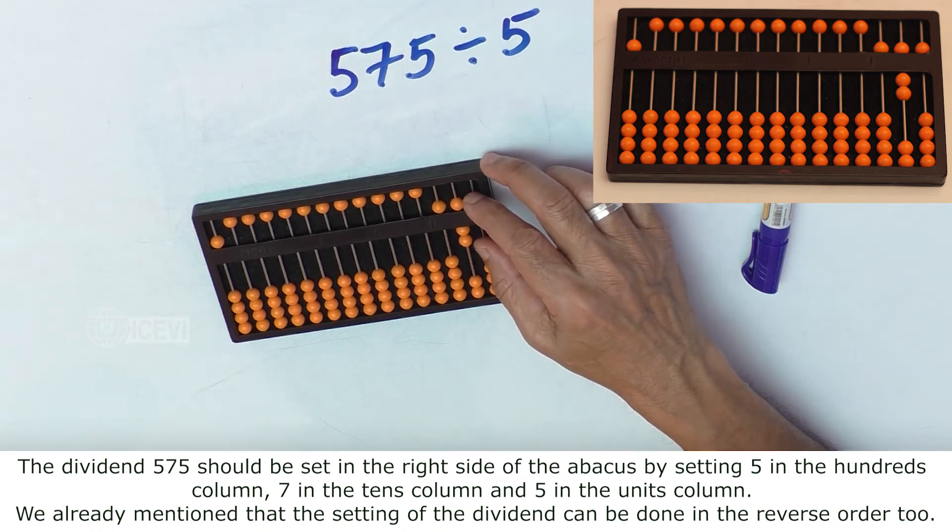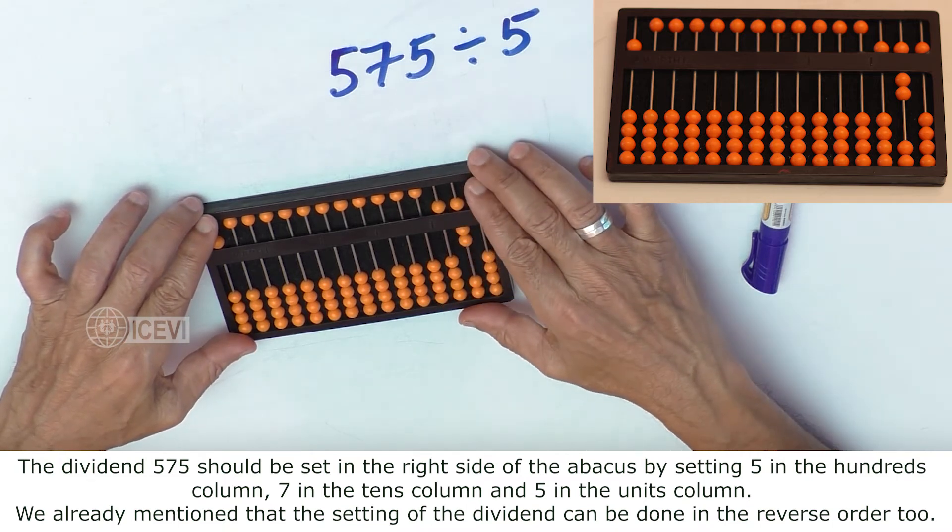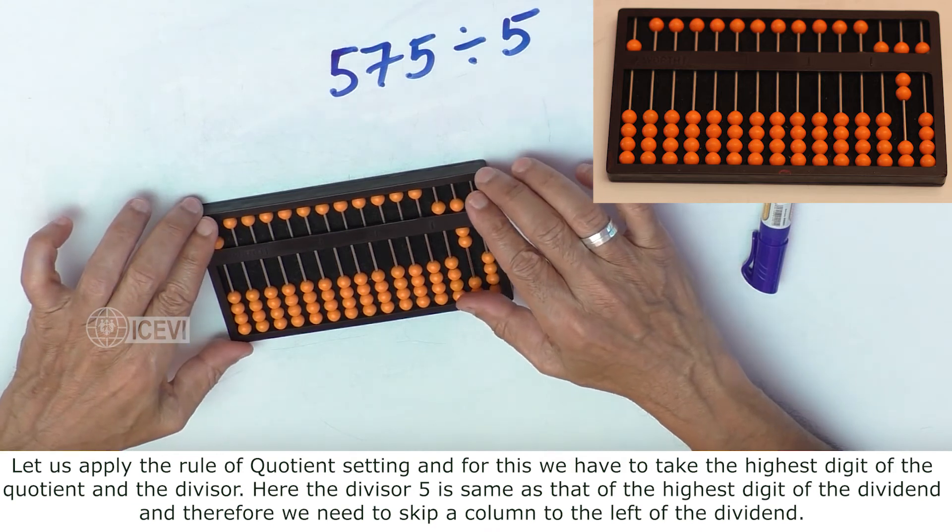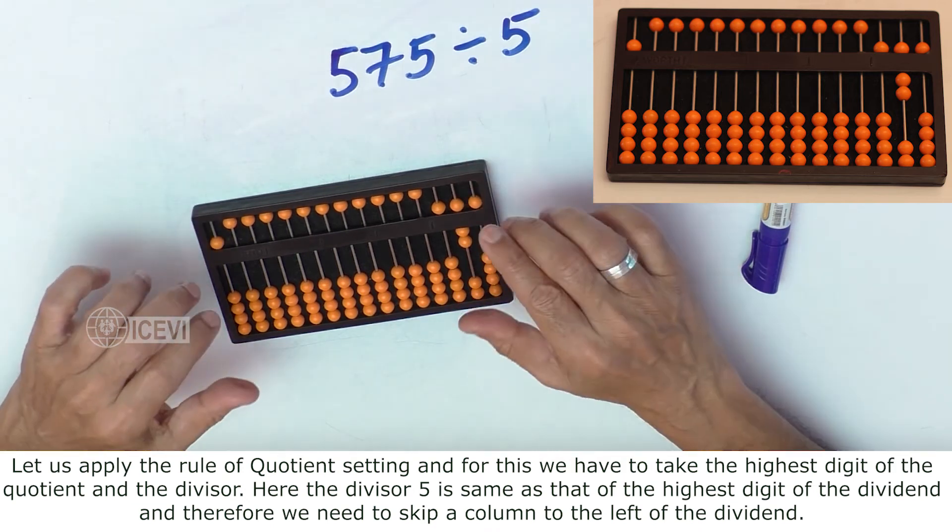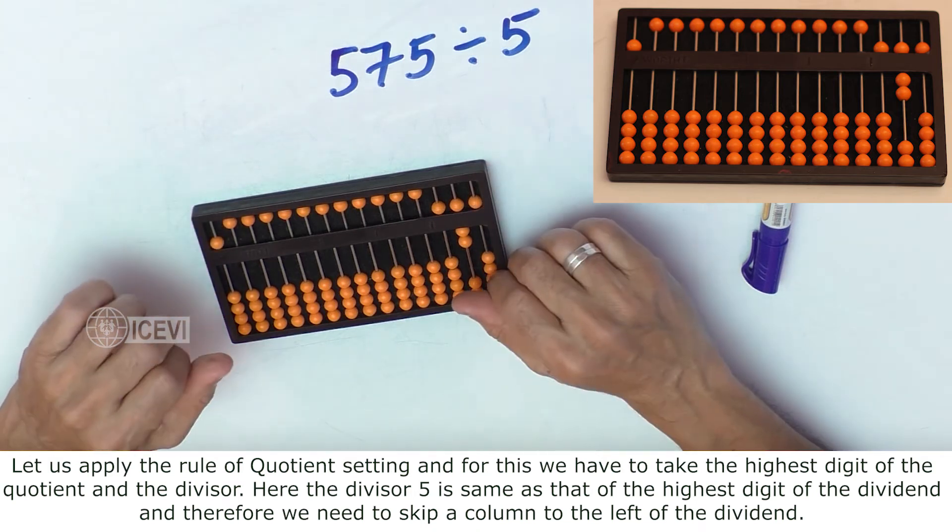We already mentioned that setting the dividend can be done in the reverse order too. Let us apply the quotient setting rule, and for this we have to take the highest digit of the quotient and the divisor.